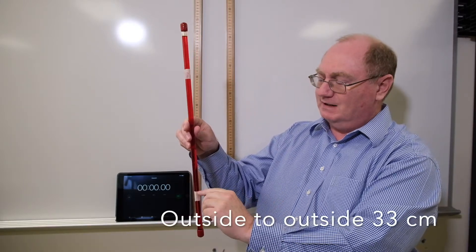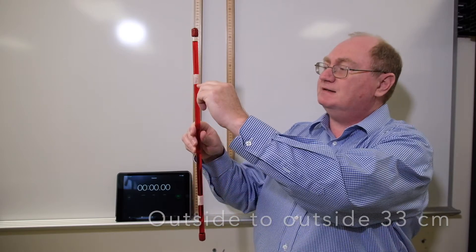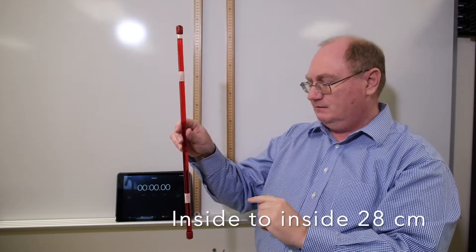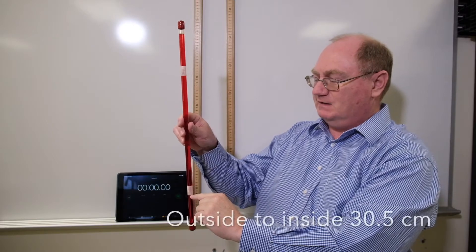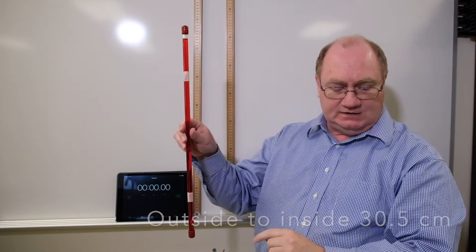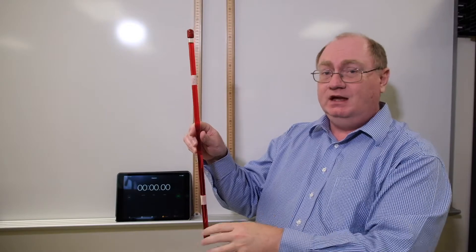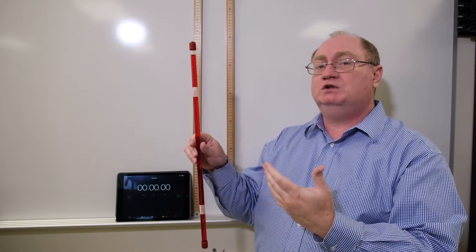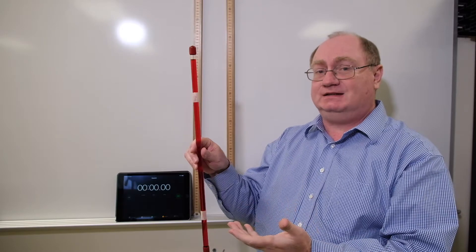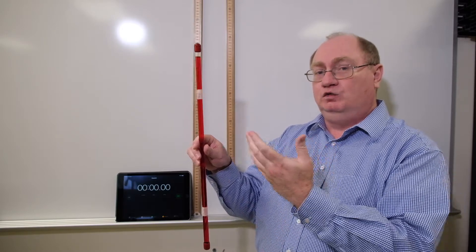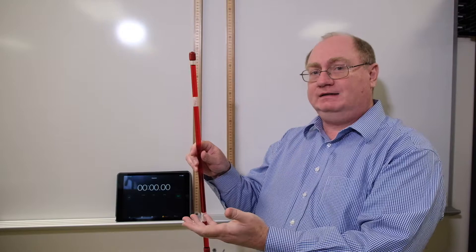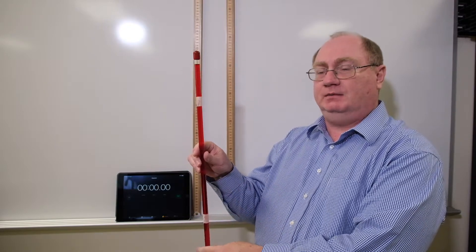The distance from the inside of this tape to the inside of this piece of tape is 28 centimeters, and the distance from the outside of one tape to the inside of the other is 30.5 centimeters. You choose which measurement you're going to use as long as you stay consistent. You know the distance and you're going to find a time, so you should be able to find the velocity of the bubble.